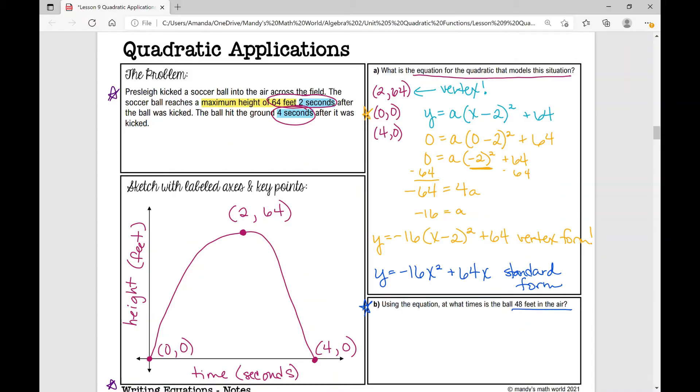What I'm going to do is I'm going to use this equation right here, and I'm going to plug in 48 for y. We're looking for when y is 48, what is x? So 48 equals negative 16 times x minus two squared plus 64. I'm using vertex form because I can manipulate it easier.